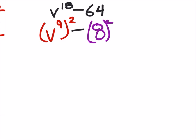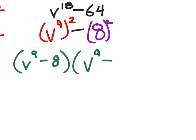And we're subtracting. So we got the difference of two squares. You could factor this by grouping. But for time's sake, I'm just going to factor this using the difference of squares. So I've got v to the power of 9 minus 8. And then I've got v to the power of 9 plus 8.